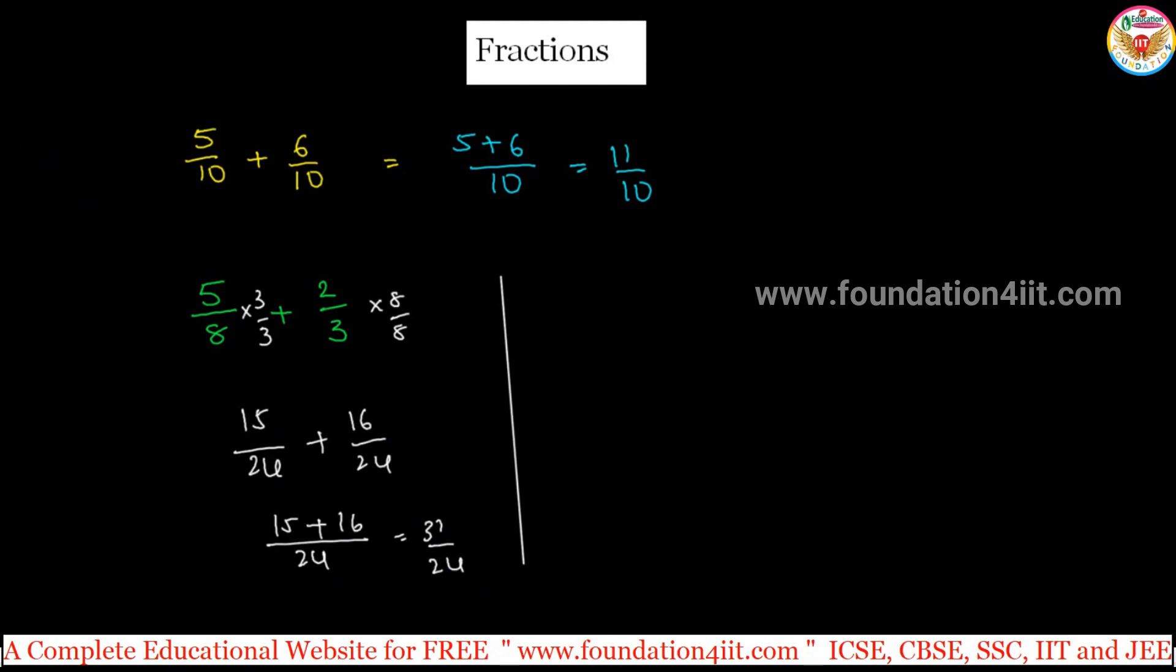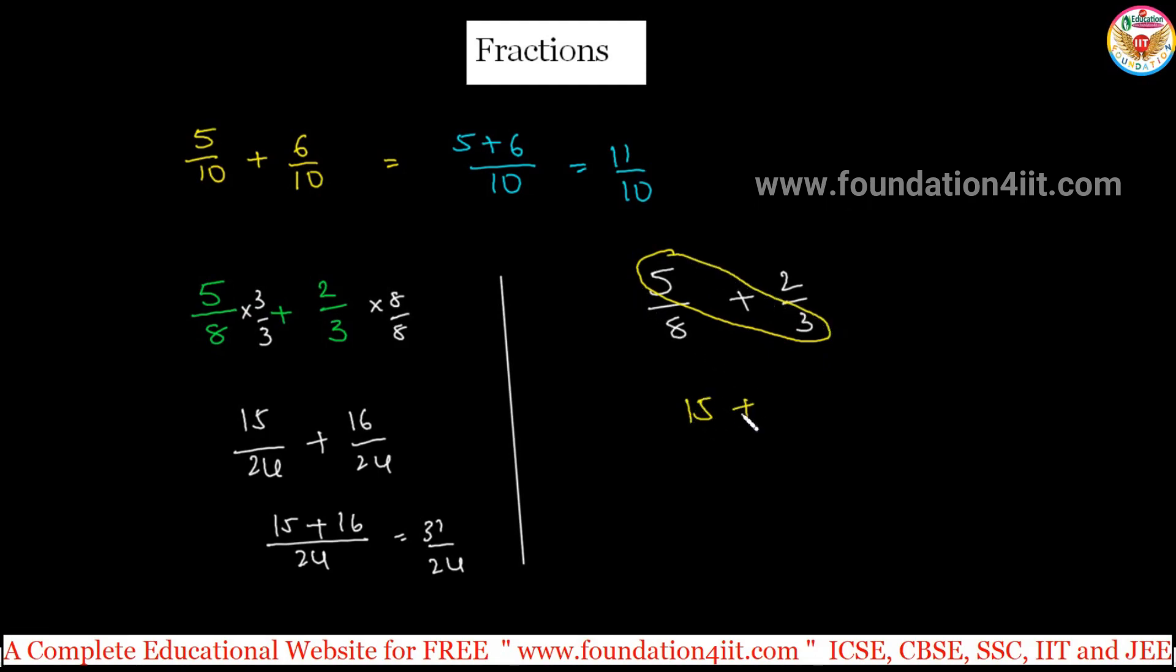This is the normal process, but same concept in a different way. For example, same question: 5 by 8 plus 2 by 3. If you want to add these two fractions, go for the cross sum application. That means first fraction numerator into second fraction denominator. You can calculate in mind: 5 into 3, 2 into 8.